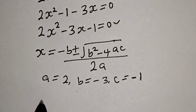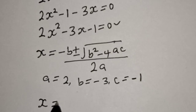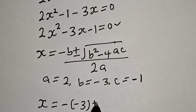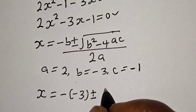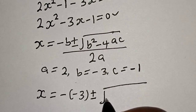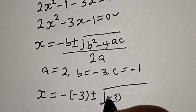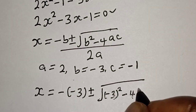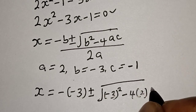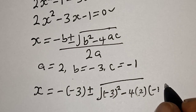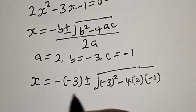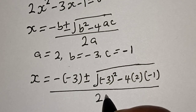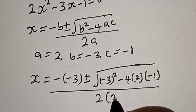Now let's substitute. We have s equal to minus of minus 3, plus or minus square root of minus 3 squared minus 4 multiplied by 2 multiplied by minus 1, all over 2 multiplied by 2.